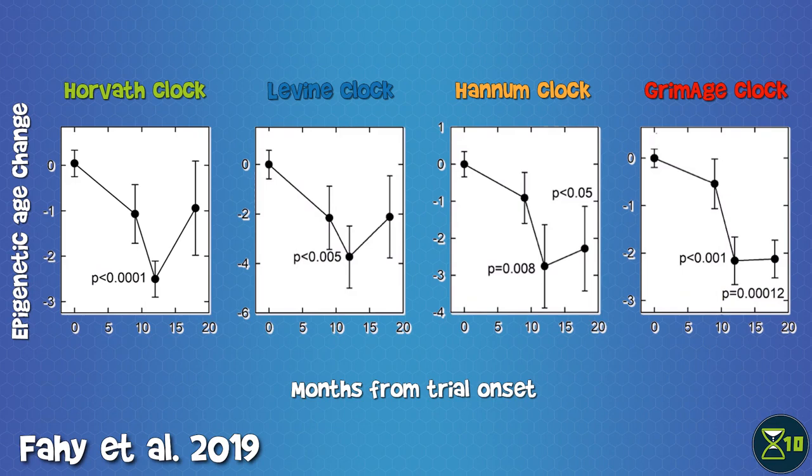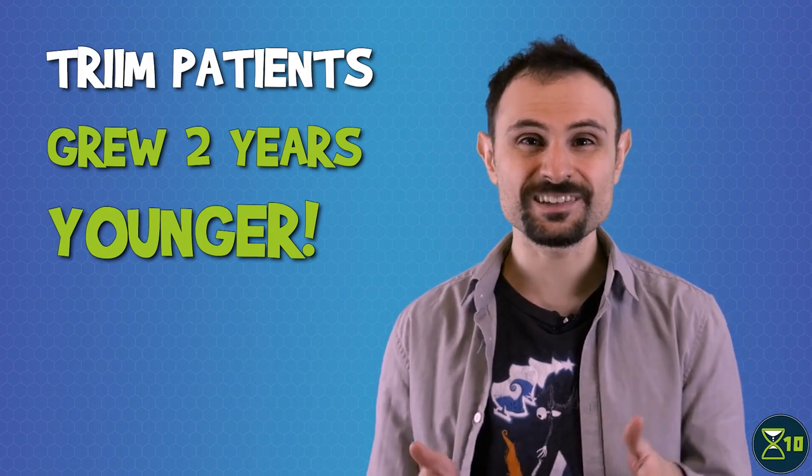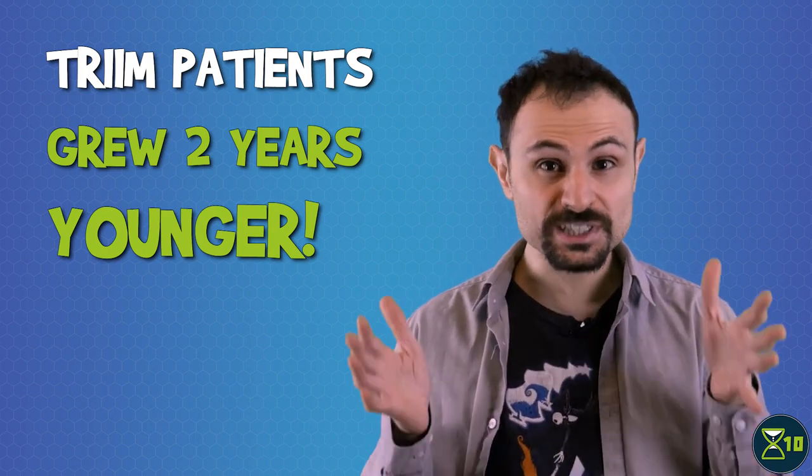All four clocks showed similar reductions in biological age, meaning that the patients were getting biologically younger. The data showed that this reversal accelerated as the treatment progressed, and as with many effects observed in this trial, this benefit persisted for months after the trial was concluded. One of the epigenetic clocks, very aptly named Grimmage, is able to accurately predict the patient's remaining lifespan and age of death. According to this clock, the patient's lifespan was extended by about two years.